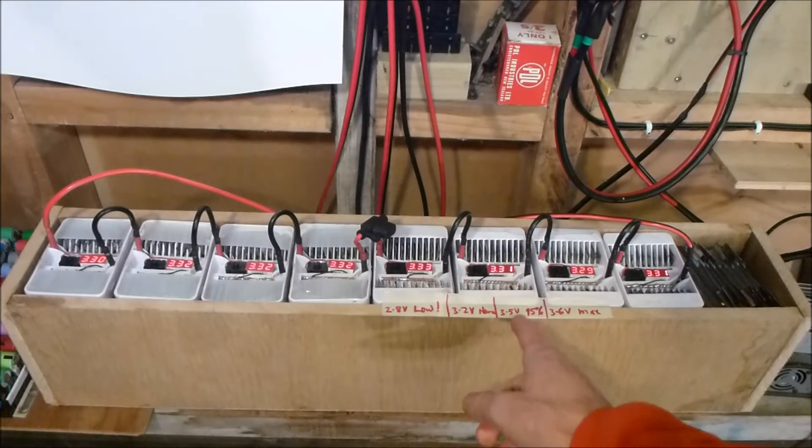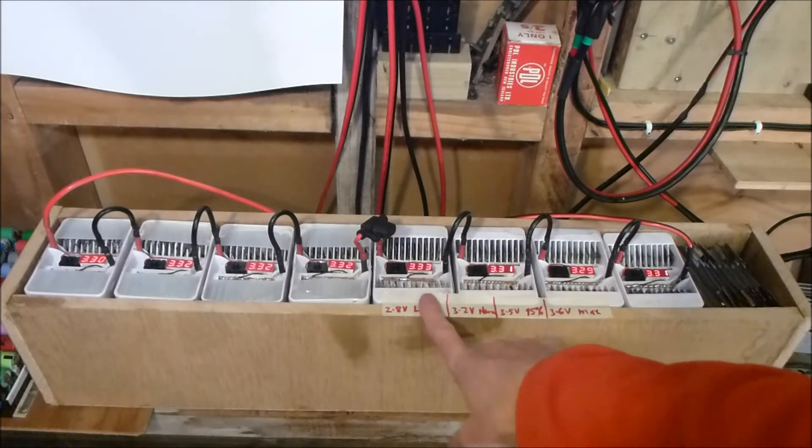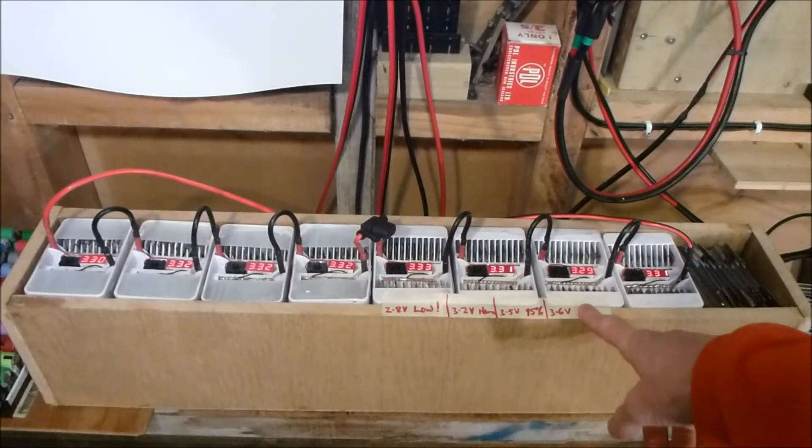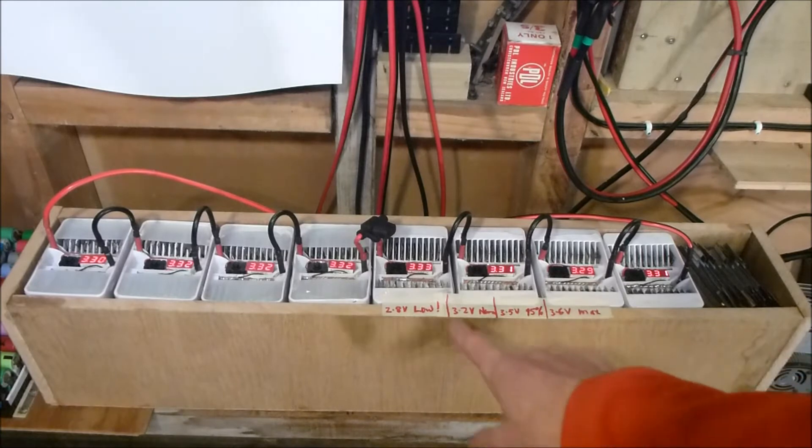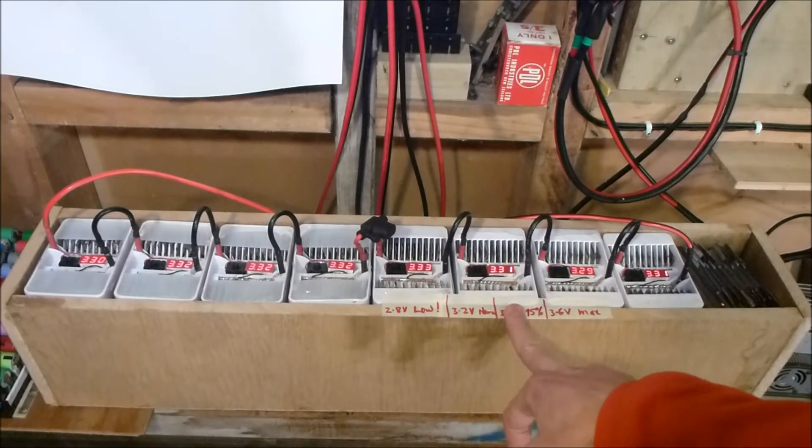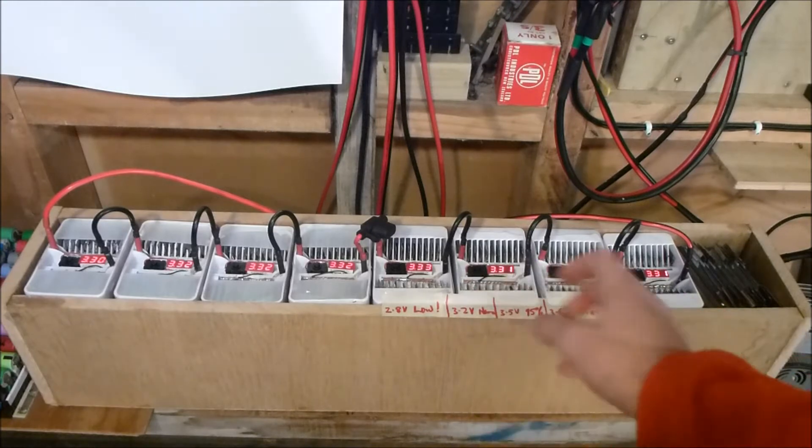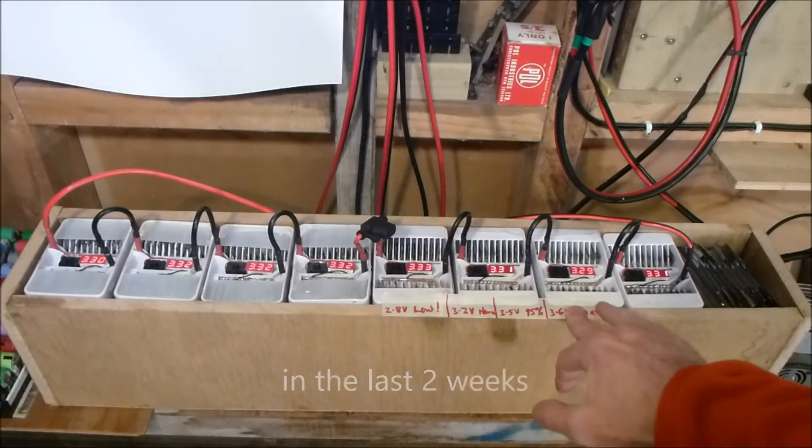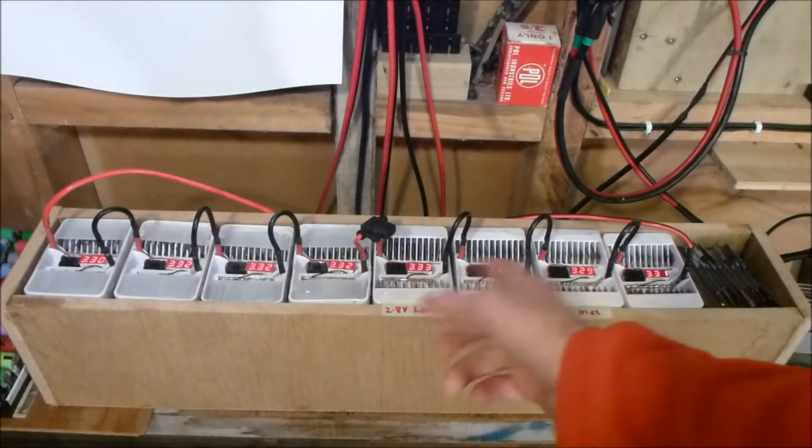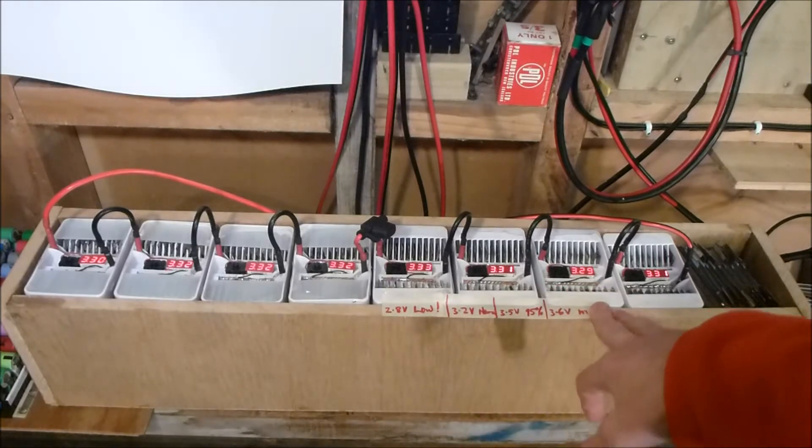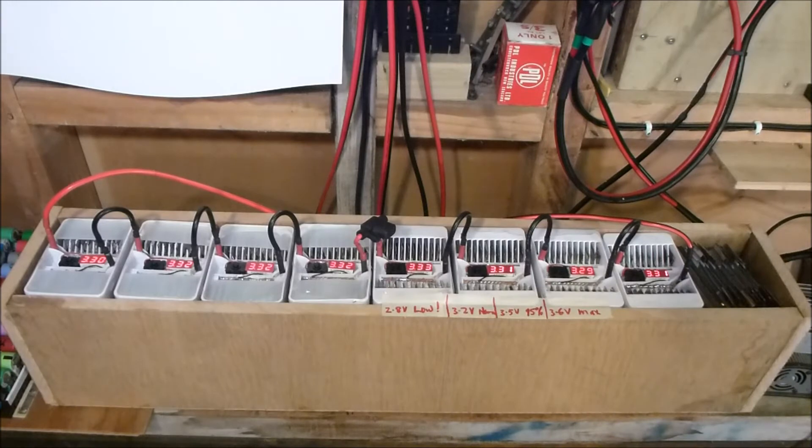There's no BMS, so the highest cell is currently 3.33V, the lowest is 3.29V, and the nominal voltage is 3.2V. Those voltages are quite comfortable. It's not drifting out of whack at all. If I do see something start to drift, I can do something about it, but at the moment there doesn't seem to be any need.